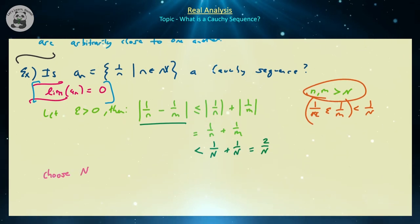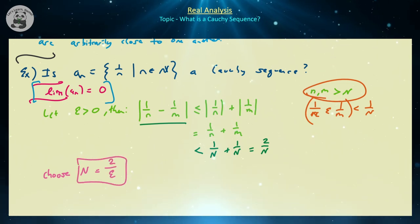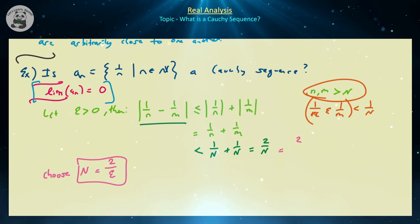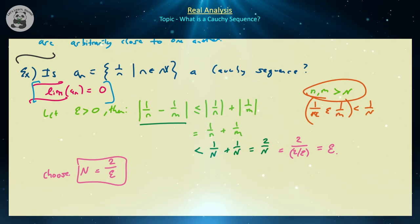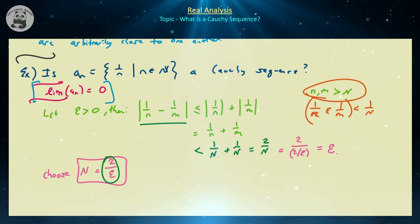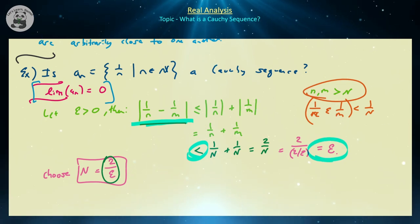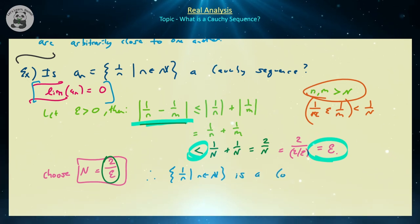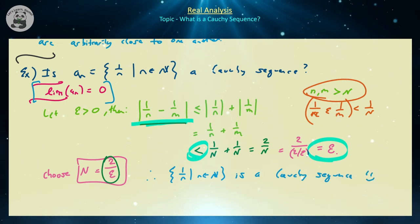We're going to choose N = 2/ε. Given any value of ε, there exists an N such that if n and m are bigger than capital N, then the sum is less than ε, because 2/(2/ε) = ε. So as long as n and m are both bigger than 2/ε, the distance between consecutive terms will be less than ε. Therefore the sequence 1/n (where n is in the natural numbers) is a Cauchy sequence. Proving Cauchy-ness is actually not that hard.